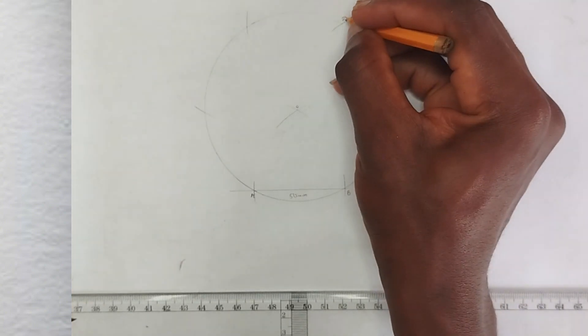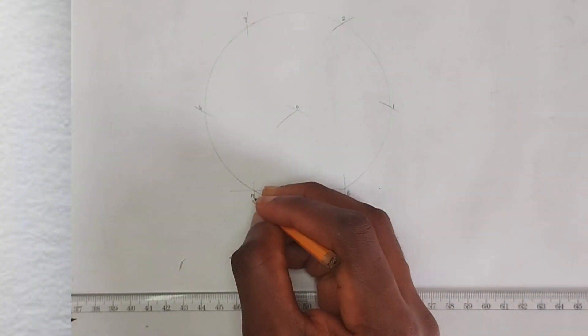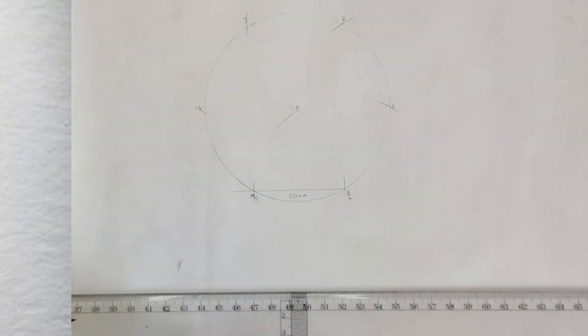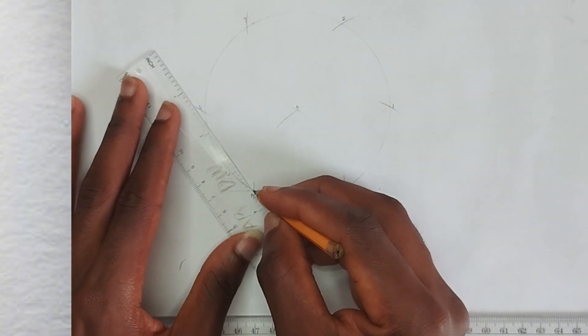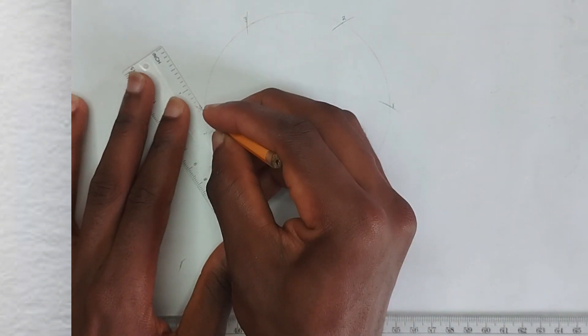You can actually label here as P1, 2, 3, 4, this is 5 and this is 6. So now we are going to be joining those points together, which is going to be like this from here to here.